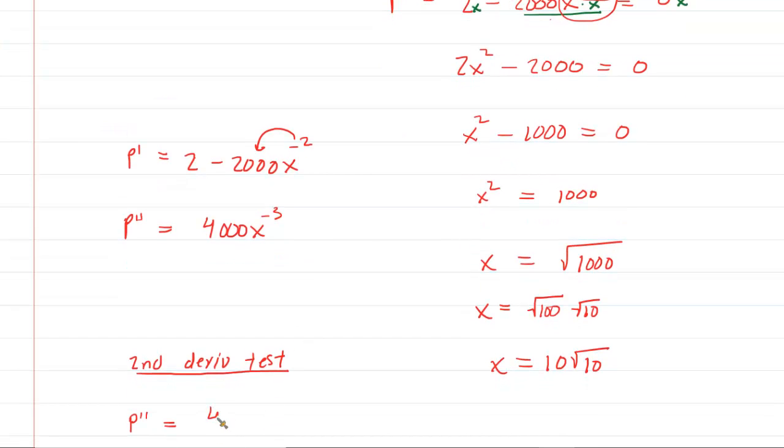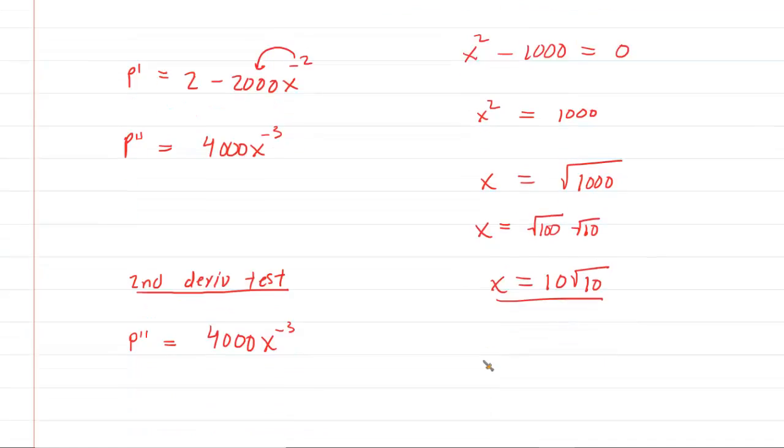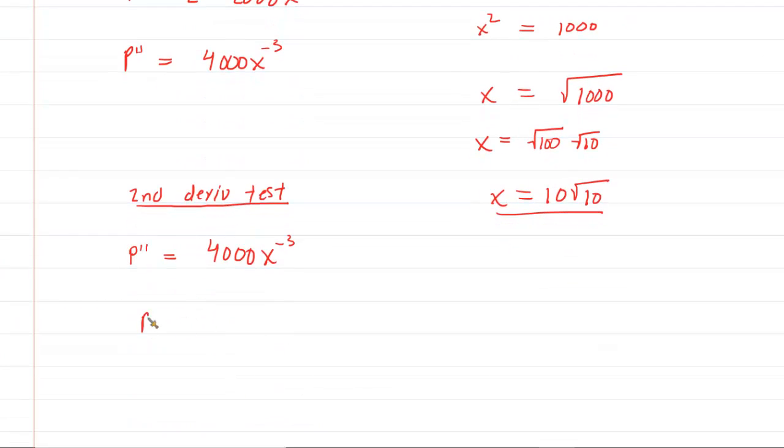What we do is we take our critical point, which is 10√10, and we plug it in. You may wish to rewrite this as 4000 over x cubed. And then when you plug in your critical point, you don't actually need to compute the precise value here. What you're trying to do is figure out if this is positive or negative. Hopefully, you can see that this will be a positive value, so it's going to be greater than 0. And whenever the second derivative is greater than 0, that means that the curve is concave up. So that shows that at the critical point, the concavity is upward, which indeed minimizes the value for the perimeter.